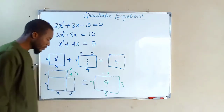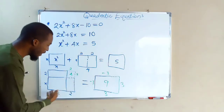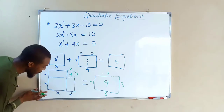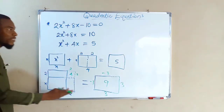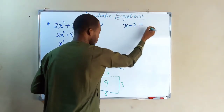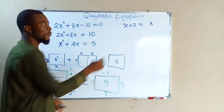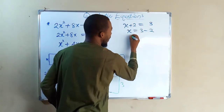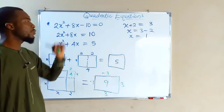Now to find the solution for this quadratic equation, we relate the sides together. This side has total length x plus 2, and the corresponding side has length 3, so we equate them: x plus 2 equals 3. Taking 2 to the right-hand side, x equals 3 minus 2, so x equals 1. We have found one of the solutions.